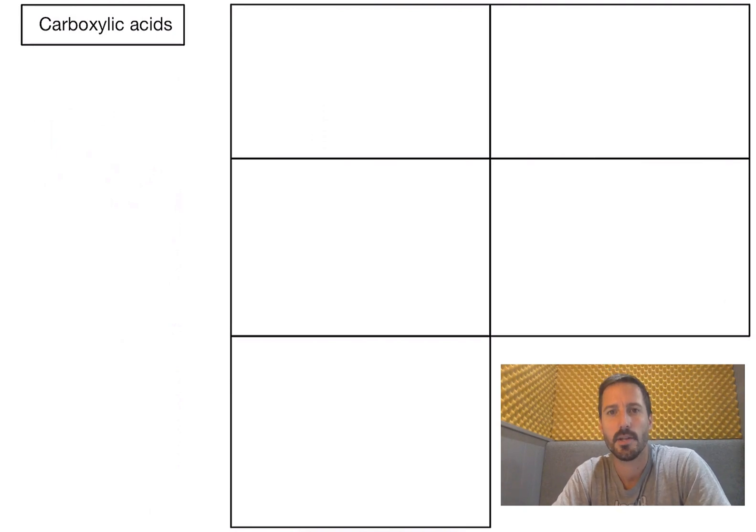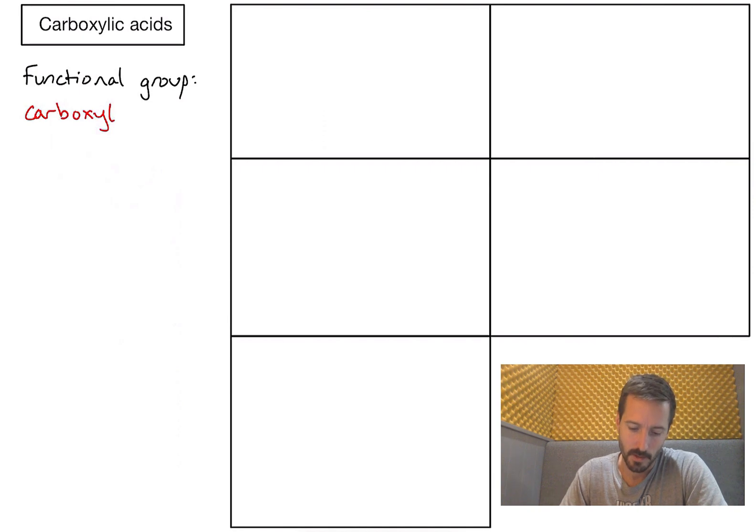In this video we're going to look at how to name the class of compounds called carboxylic acids. What makes something a carboxylic acid? It's an organic compound that contains the carboxyl functional group. What exactly is that? It's where I have a carbon double bonded to an oxygen and also single bonded to an oxygen and a hydrogen. We'll see some of those in the examples in a moment.